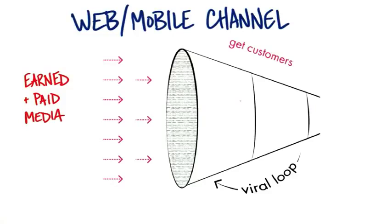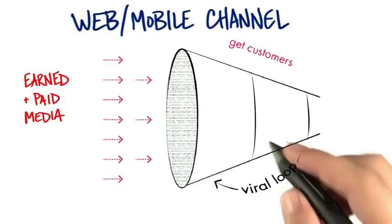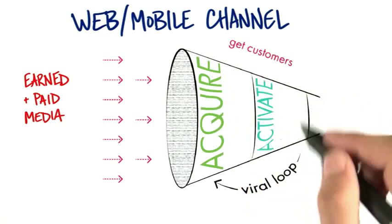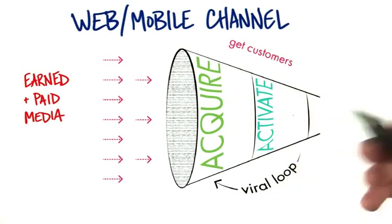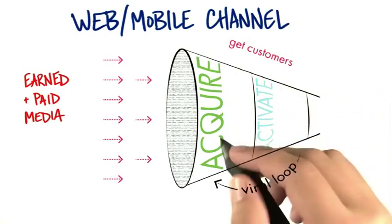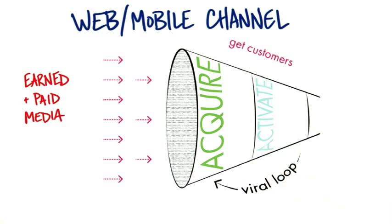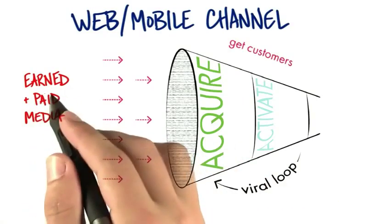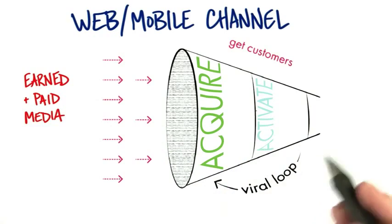On the web, we really just have to do two things. First, we've got to acquire customers, and then we activate them. What does acquire mean? Acquire on the web means I want to get them to my site, my mobile app, or my cloud app. Earned and paid media will drive customers to a place where you are.